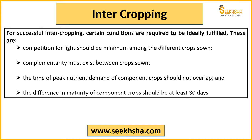For inter-cropping, some conditions must be satisfied. Competition for light should be minimum — a crop that is being shaded cannot be used in inter-cropping. Complementarity should be present; crops should not compete for nutrients. Both crops should not have the same peak nutrient demand time — their nutrient demand peaks should not overlap. Also, there should be a maturity difference of at least 30 days between the two crops, which is also helpful for soil health.